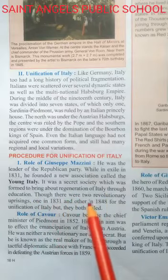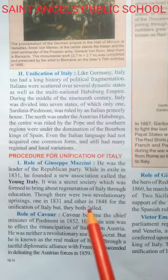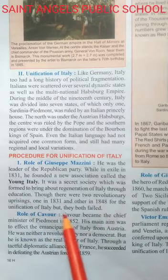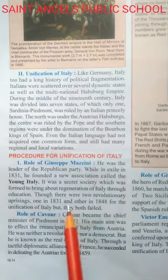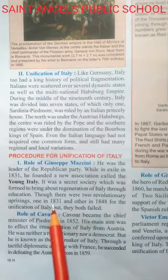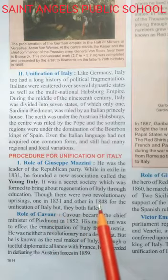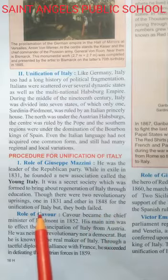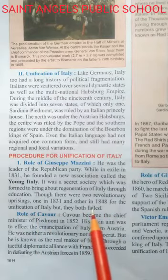Though there were two revolutionary uprisings, one in 1831 and another in 1848, for the unification of Italy, but they both failed. Both attempts at unifying Italy, in 1831 and 1848, were unsuccessful.